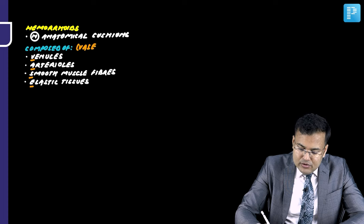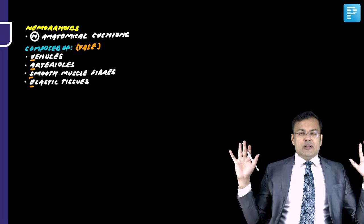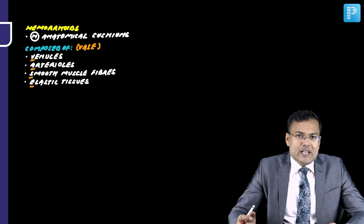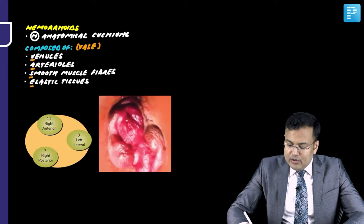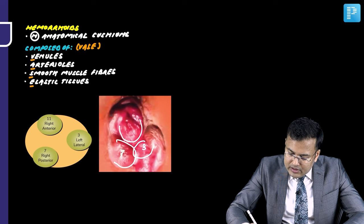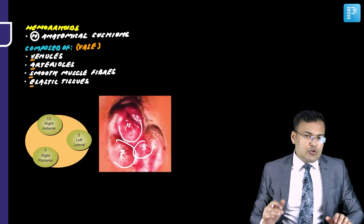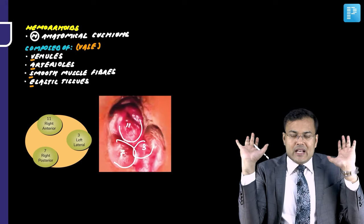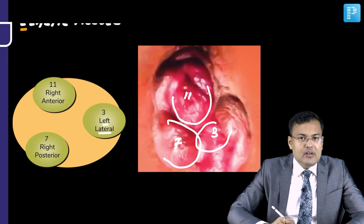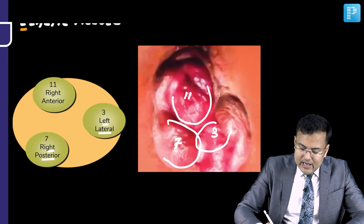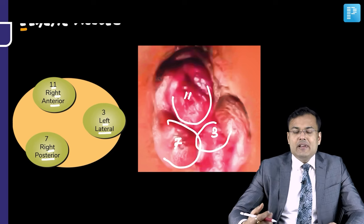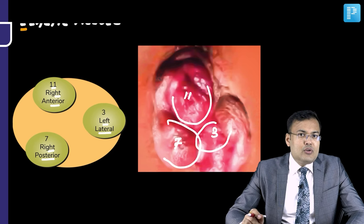Whenever the patient is in the lithotomy position and we are performing the examination, there are three hemorrhoids located at 3 o'clock, 7 o'clock, and 11 o'clock positions. The 3 o'clock position is left lateral, 7 o'clock is right posterior, and 11 o'clock is right anterior.